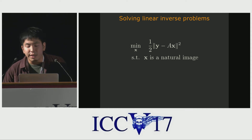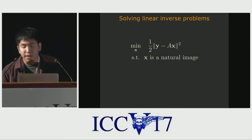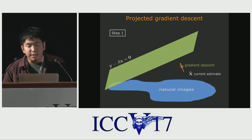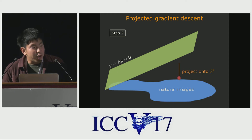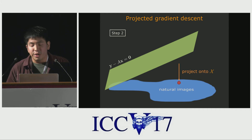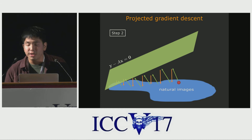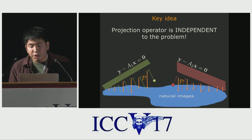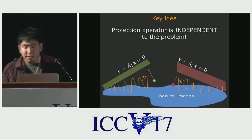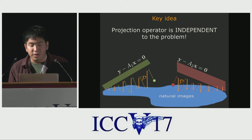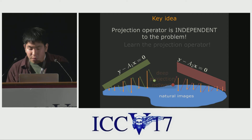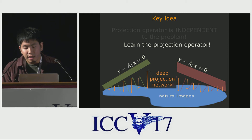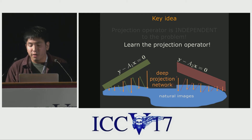We are motivated by the projected gradient descent algorithm. Linear inverse problems of images can be solved by minimizing the norm of Y-AX, subject to the constraint that X is a natural image. Projected gradient descent has two steps. The first step is a typical gradient descent on the objective function. The second step is very important: it projects our current estimate onto the constraint set. We repeat the two steps until convergence is achieved. A very important property of projected gradient descent is that the projection operator is independent of the specific problem we are solving. This means the same projection operator is used to solve any linear inverse problem of images. Therefore, we propose to learn the projection operator with a deep neural net, which allows us to use the learned projection network to solve any linear inverse problem of images.